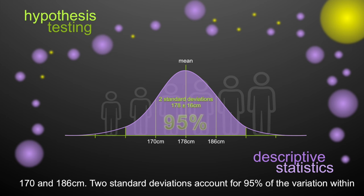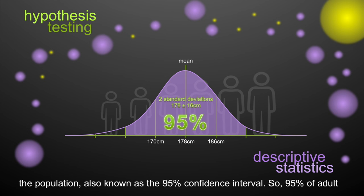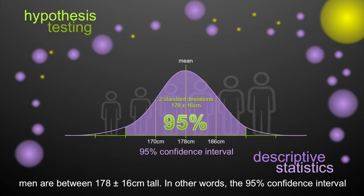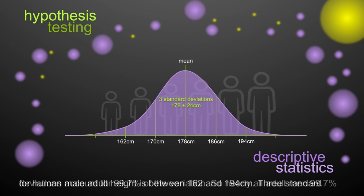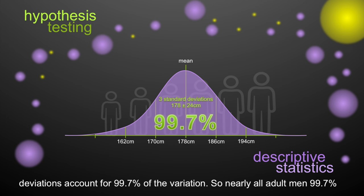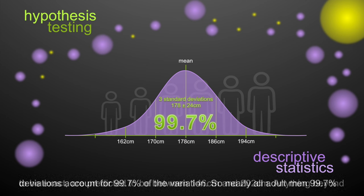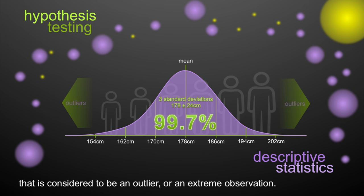Two standard deviations account for 95% of the variation within the population, also known as the 95% confidence interval. So 95% of adult men are between 178 plus or minus 16 cm tall — in other words, between 162 cm and 194 cm. Three standard deviations account for 99.7% of the variation, so nearly all adult men are predicted to be between 146 and 202 cm. Anything beyond that is considered an outlier or an extreme observation.